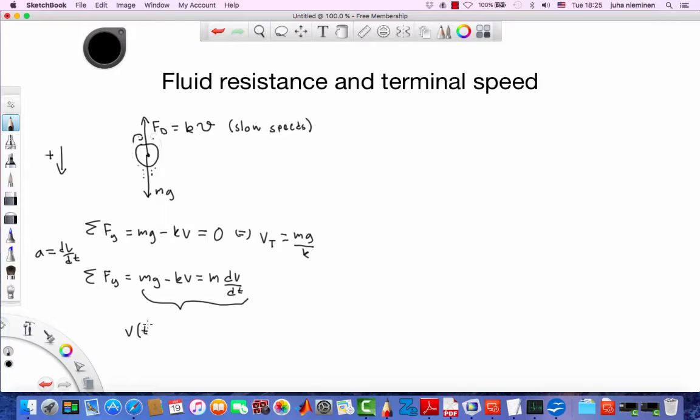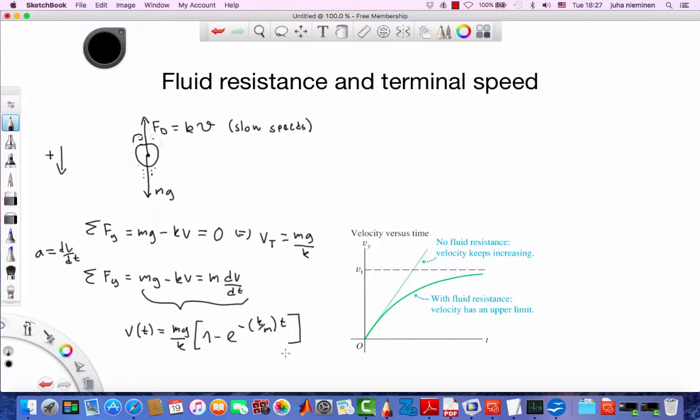It says that the velocity as a function of time is Mg over K. So this is the terminal velocity times one minus exponent of minus K over M times T. And if we plot this curve or this function, this is what we get. So that's the dark green here. And one can see the effect of terminal velocity quite clearly. So as T increases, in fact goes to infinity, this whole term goes to zero, which means that we approach the terminal velocity VT here. We actually never get to the VT, but we get arbitrarily close to it.